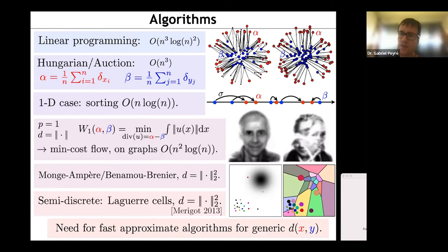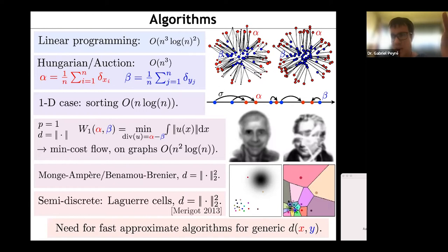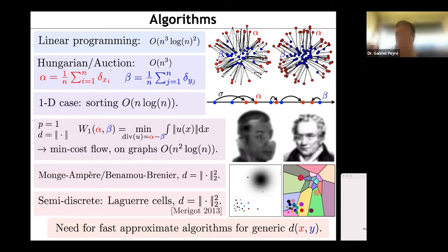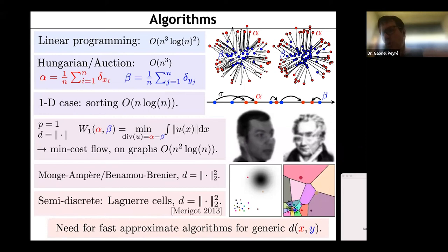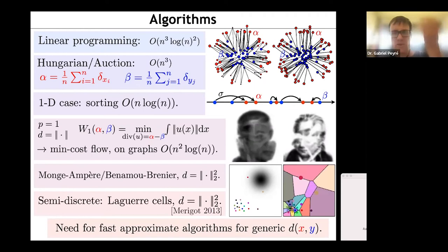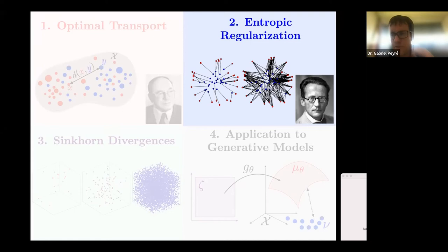One important question for machine learning and data science: you don't really care about high-precision solutions, because in practice you have a lot of noise in your data. So why use a simplex algorithm computing the solution to ten digits? You'd prefer a much faster algorithm — like n-squared — that produces some approximation error. This is where ideas from statistical physics, originally due to Schrödinger himself, come in — and the algorithm turns out to be older than optimal transport itself, used more than a hundred years ago.